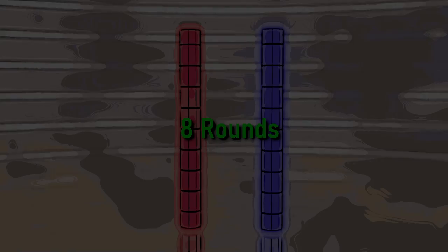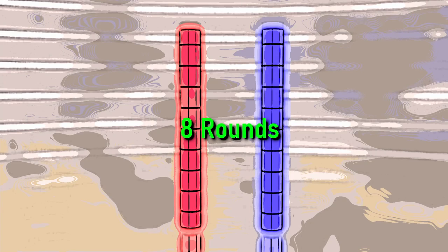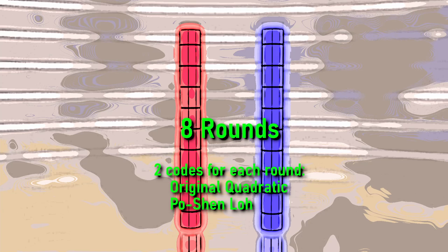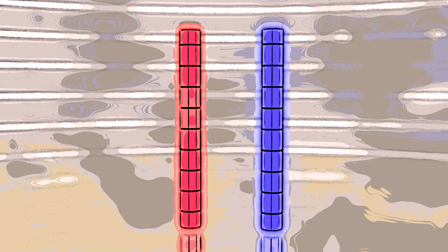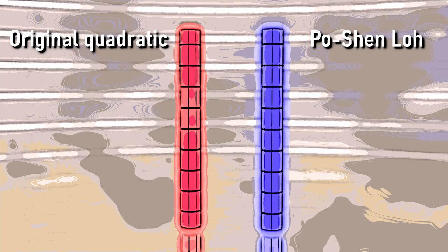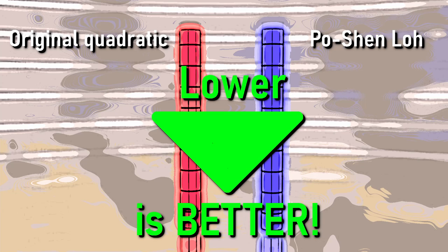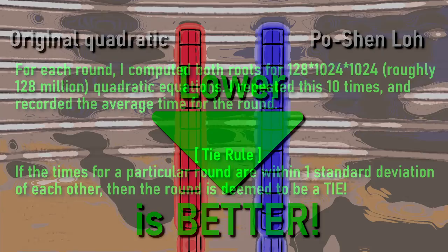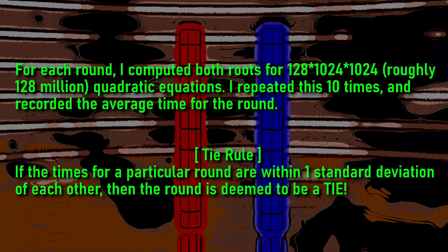Here's how this is going to work: we'll have eight different rounds. Each round we'll look at the two versions of the code, then you'll see two bars on screen. The red bar represents the original quadratic formula and the blue bar represents the Po Shen Lo formula — lower is better. The tests were run over 128 million quadratics, computed 10 times, and we average those 10 runs. If the two times are within one standard deviation, we call it a tie.